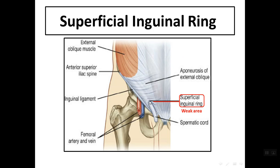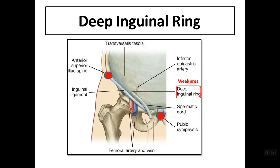The superficial inguinal ring is regarded as a weak area since it is a defect in the aponeurosis of the external oblique muscle. We can see the exit of the spermatic cord through the superficial inguinal ring, where the edge of the ring gives fibers that continue to cover the spermatic cord. The deep inguinal ring lies midway between the anterior superior iliac spine and the symphysis pubis — the mid-inguinal point — and the inferior epigastric artery lies medial to it.